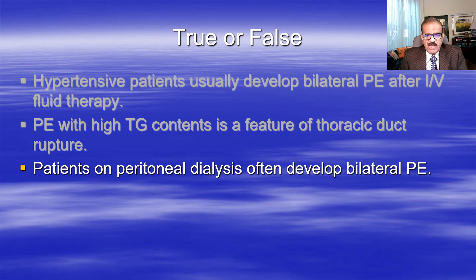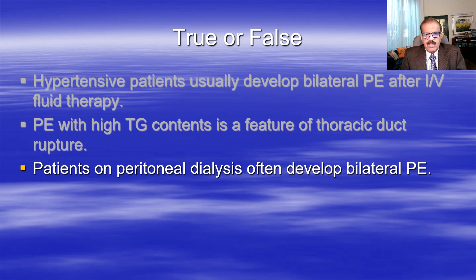Patient on peritoneal dialysis often develop bilateral pleural effusion. A small amount of fluid can travel up to the pleural space, usually on the right side. However, not every patient develops this - only occasional patients have some fluid leak from the peritoneum into the right side. So the statement as written is false.